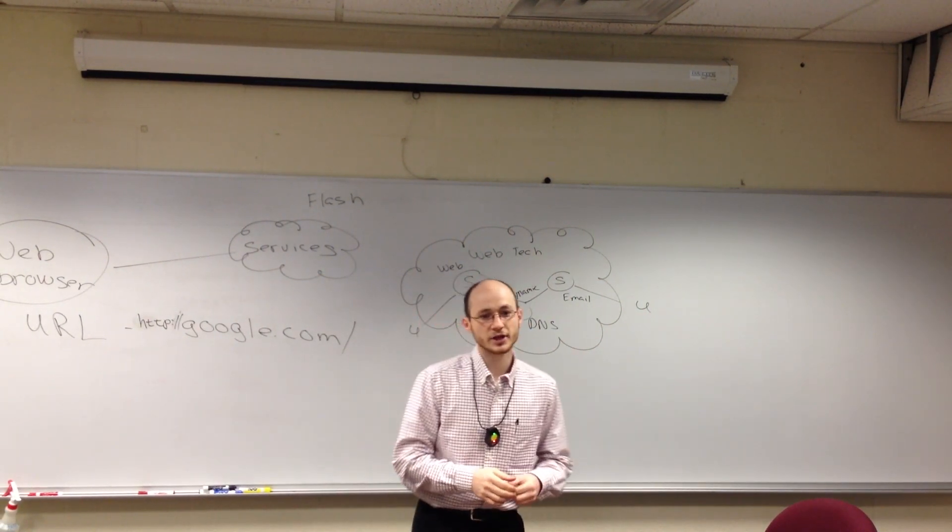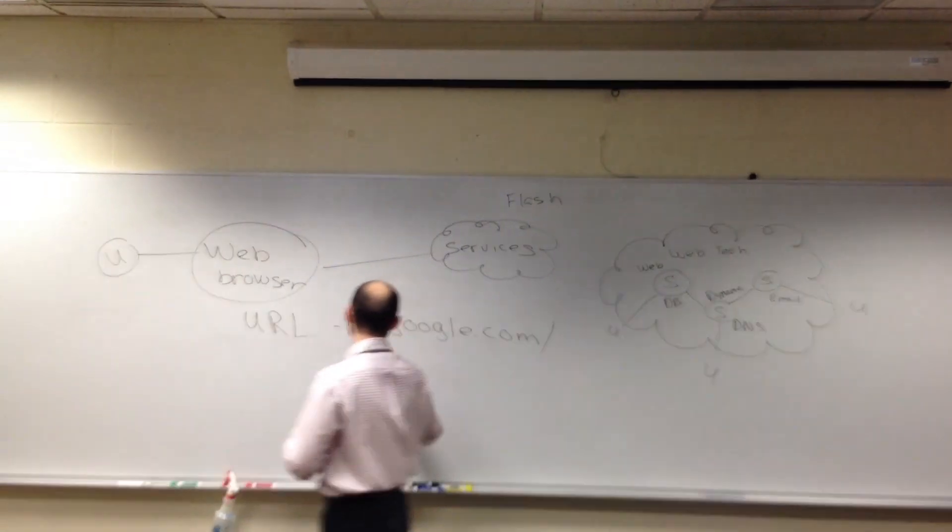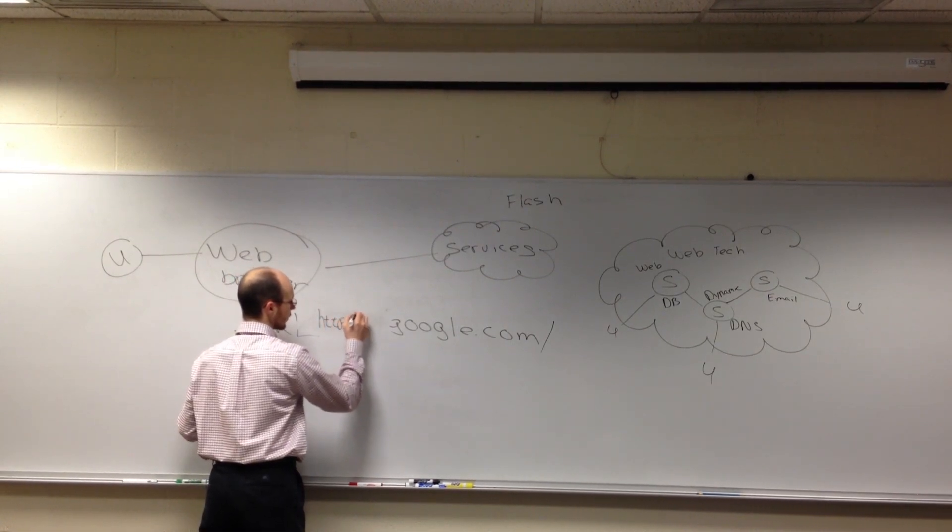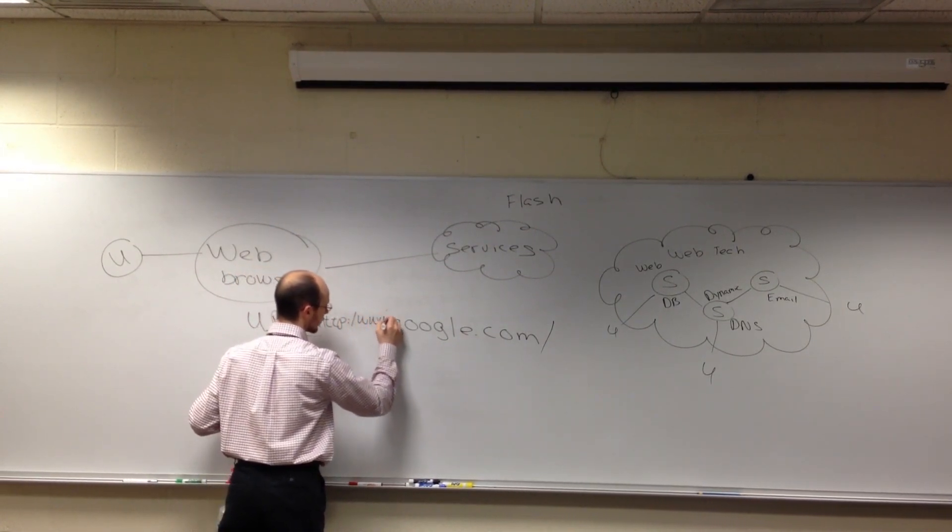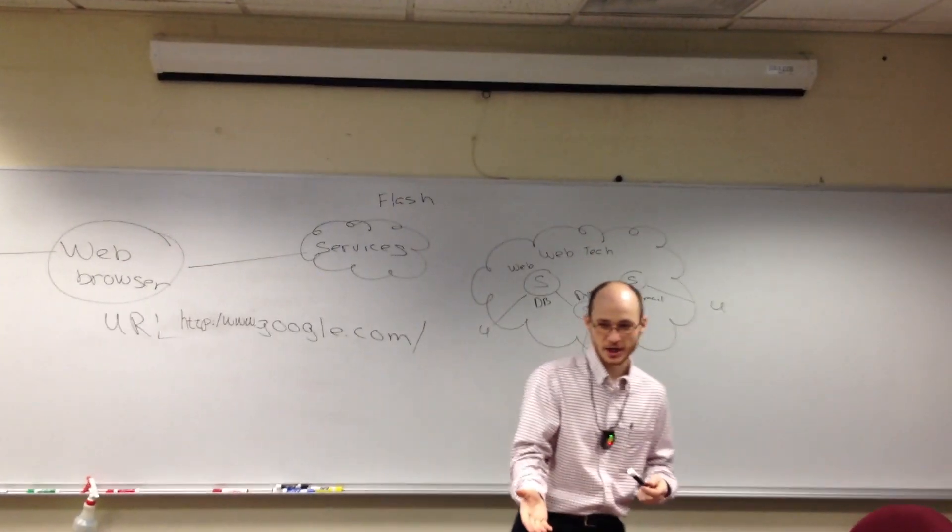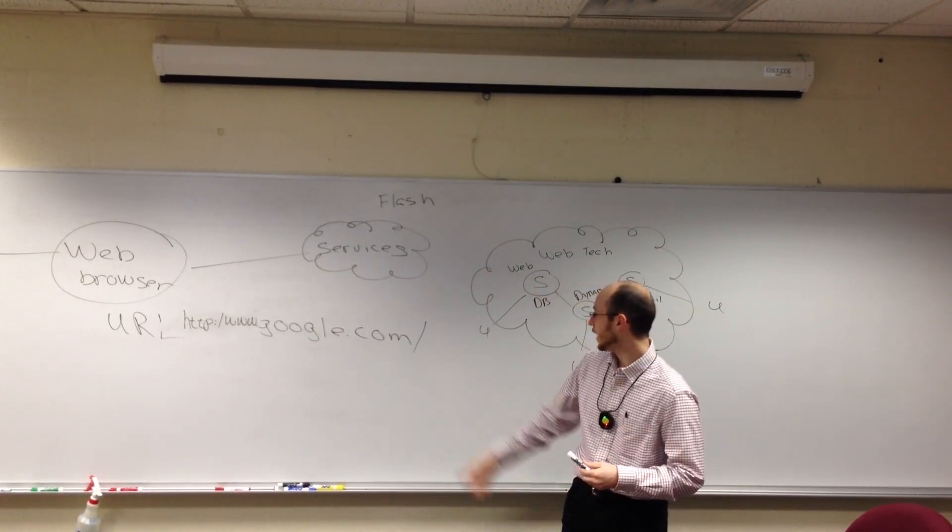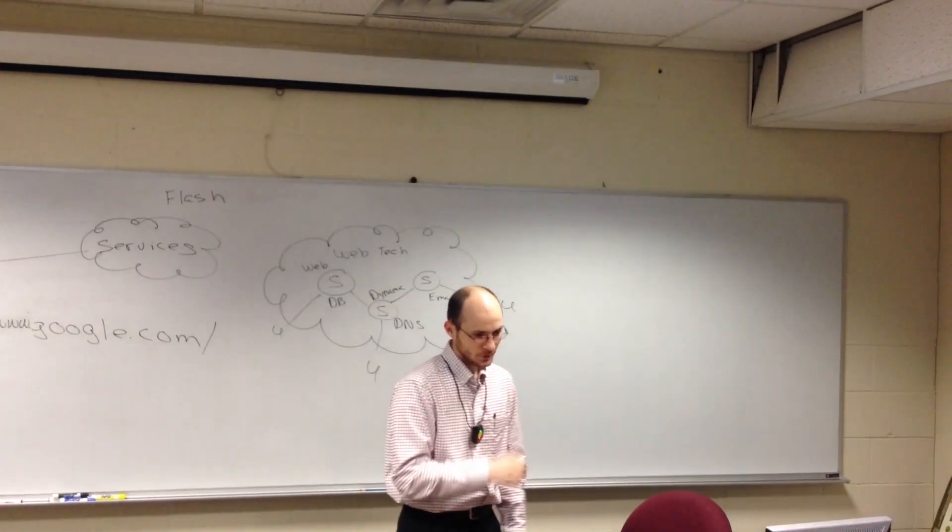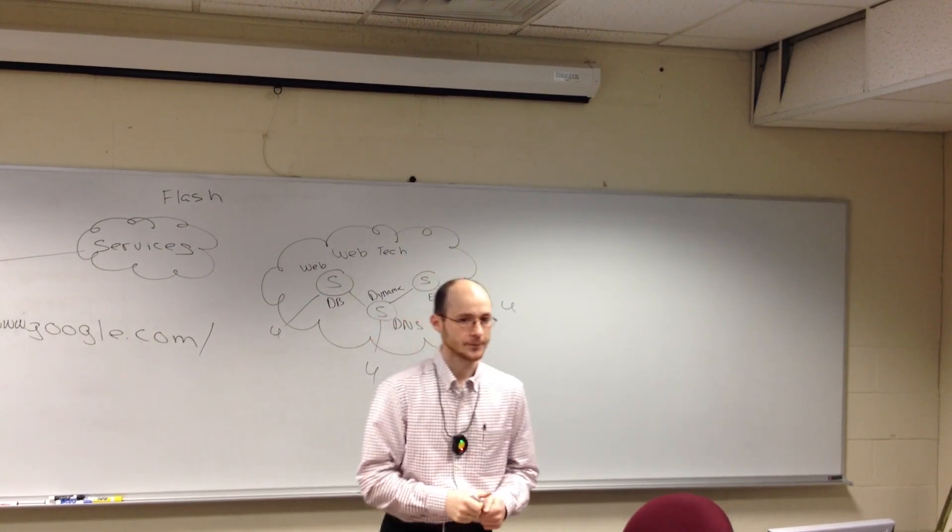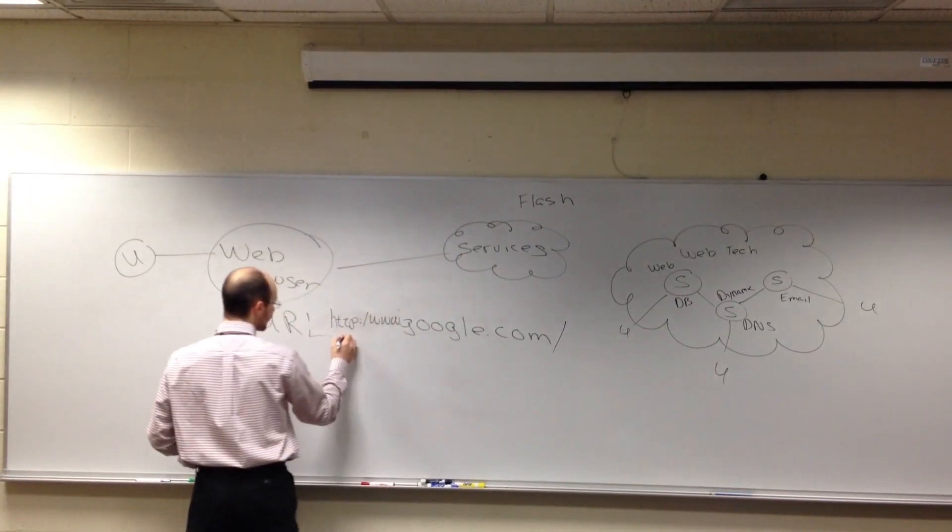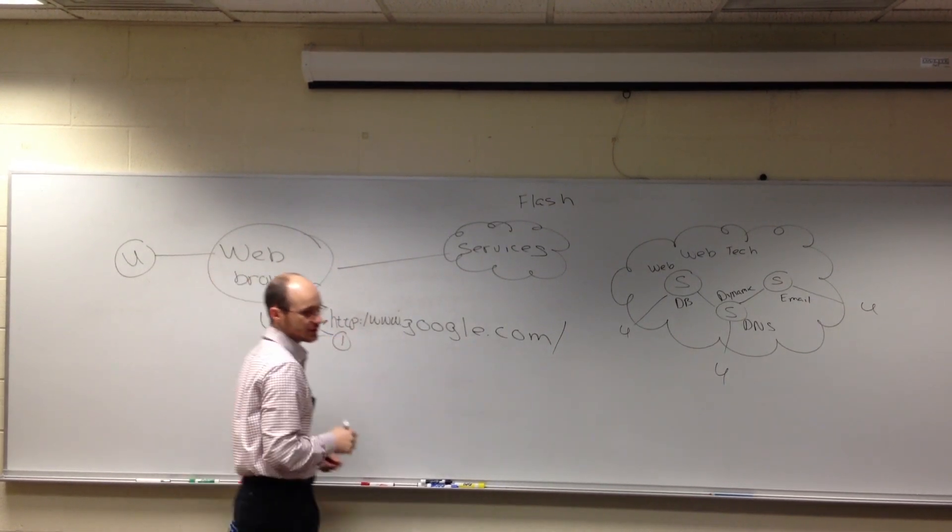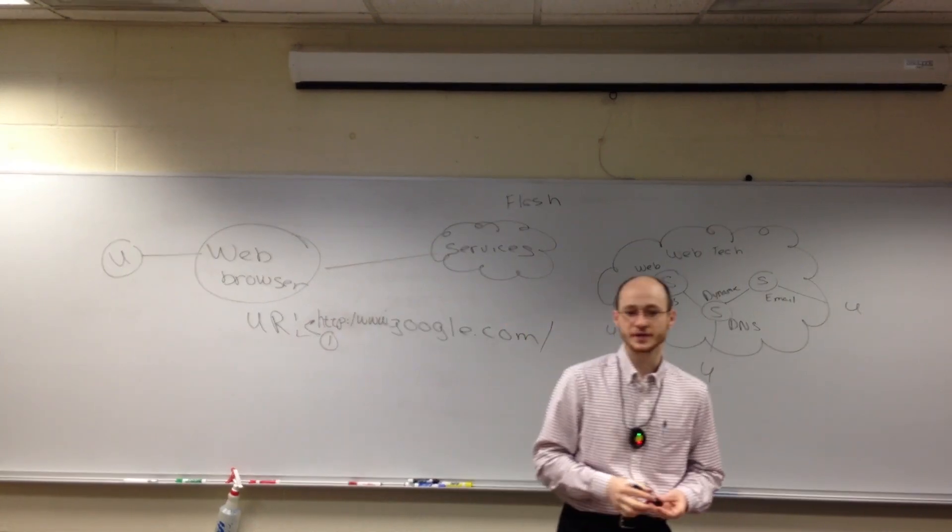When you guys open up a web browser, you type in any domain name, it's going to throw in the HTTP, colon, forward, forward slash. It'll even also probably add, which I forgot to do, my apologies, the WWW followed by a dot, followed by the domain name, and then followed by the slash. There are four to five parts of a URL. What is this part called?